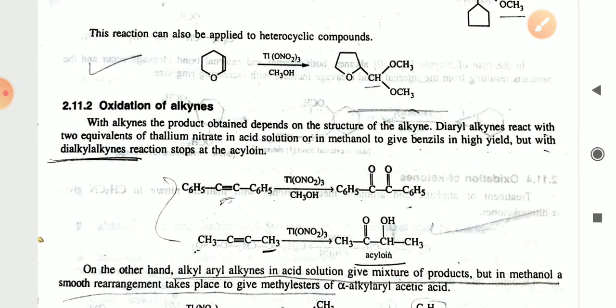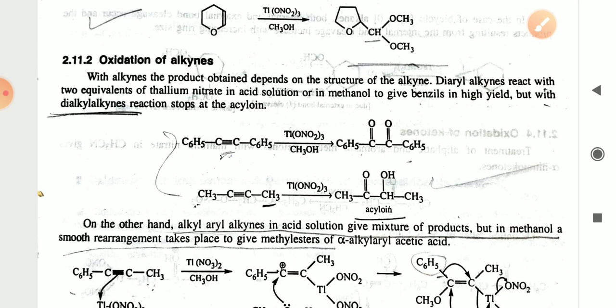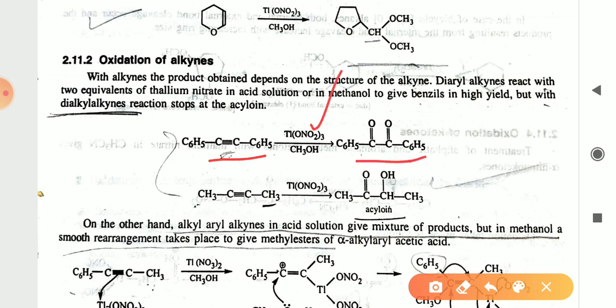For oxidation of alkynes, the product obtained depends on the structure of the alkyne. Diaryl alkynes react with two equivalents of thallium nitrate in acid solution or methanol to give benzyl in high yield. With dialkyl alkynes, the reaction stops at the acyloin. For example, C6H5–C≡C–C6H5 in the presence of thallium nitrate gives a carbonyl group or, in methanol, the benzyl product.